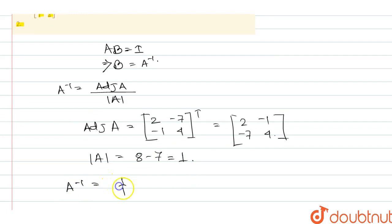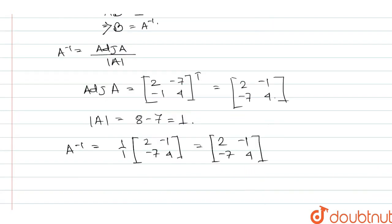1 by 1 times 2, minus 1, minus 7, and 4, equals to 2, minus 1, minus 7, 4. So B equals to 2, minus 1, minus 7, and 4.